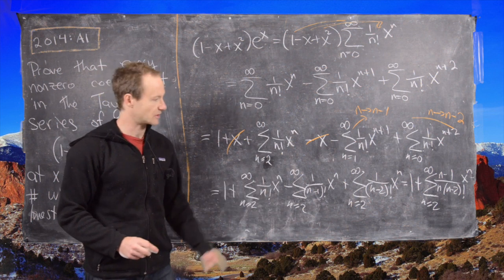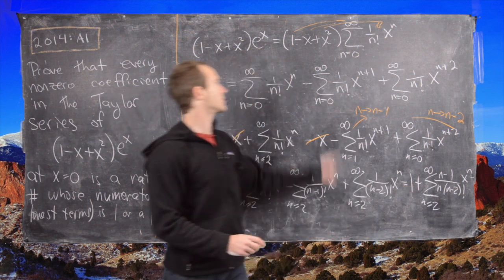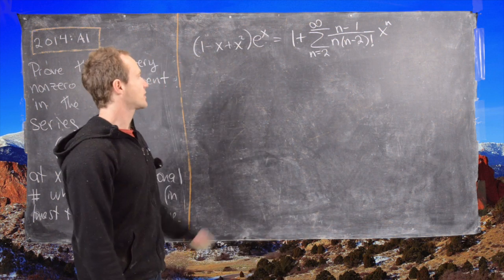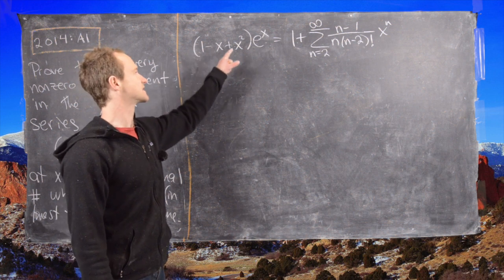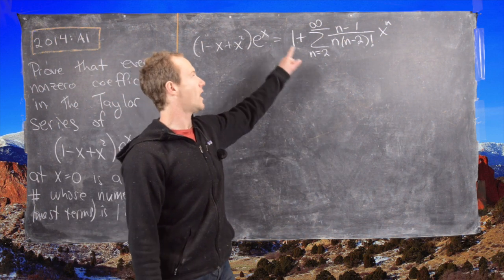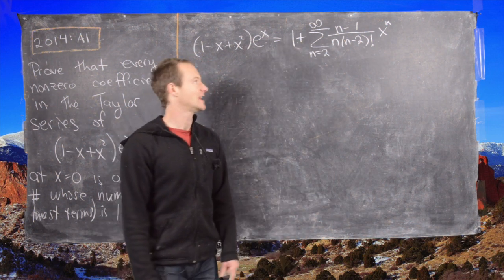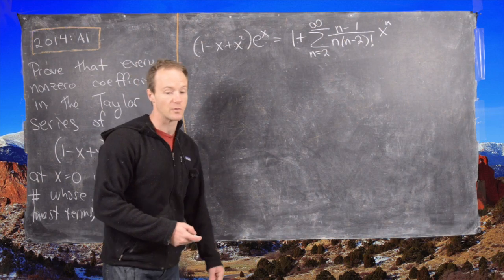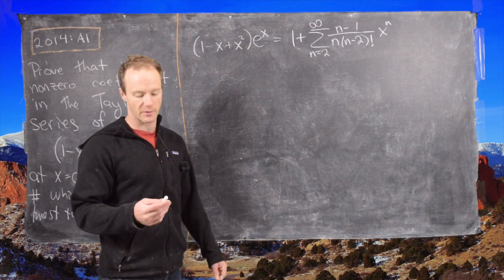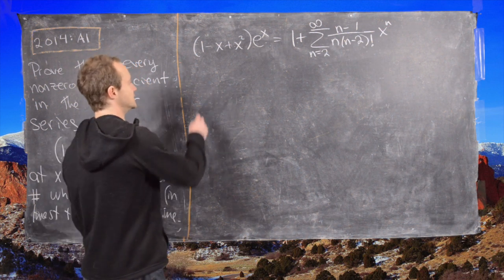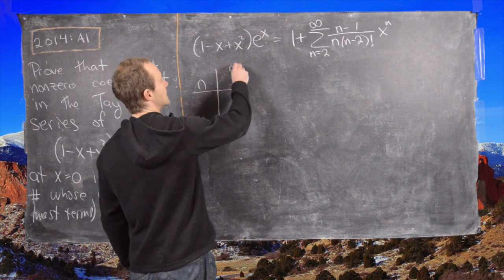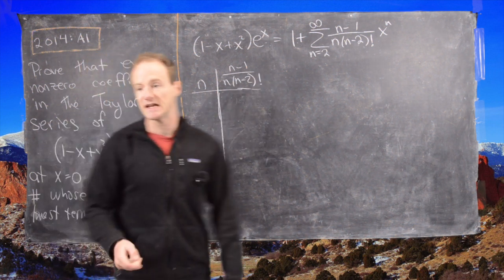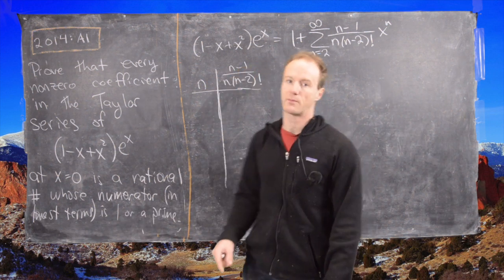So that's what we get from all this simplification. On the last board we calculated the formula for the Taylor expansion of (1 - x + x²) e to the x: it equals 1 plus the sum starting at n equals 2 to infinity of (n-1) over (n times (n-2) factorial) times x to the n. Before getting to the rest of the solution, let's explore a little with the numbers to give some motivation, and make a chart of n versus (n-1) over (n times (n-2) factorial) to verify we get 1 or a prime in the numerator.